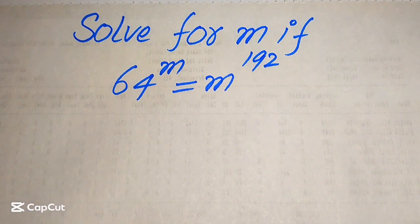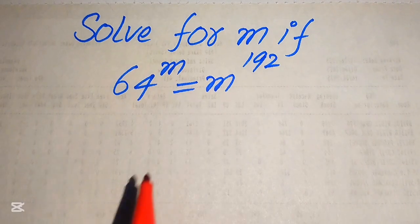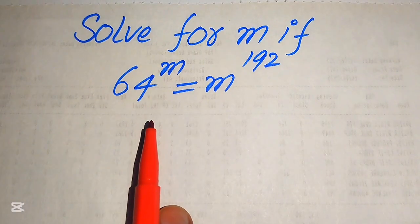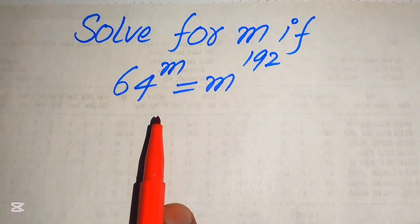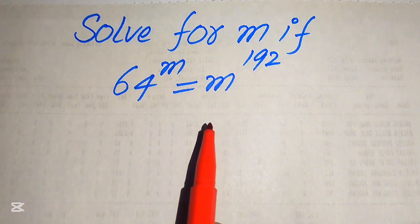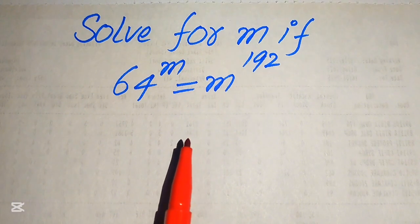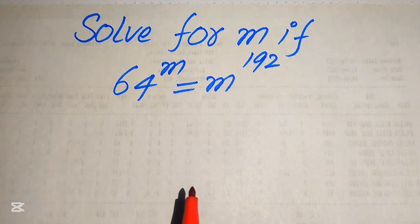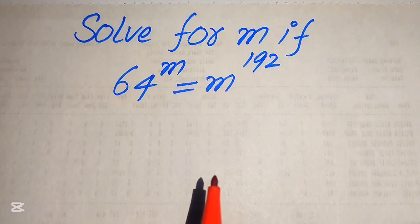Hello everyone, welcome to solving this nice math lumped exponential equation problem. Here we have 64 to the power of m equals m to the power of 192, and we solve this problem for all the values of m.